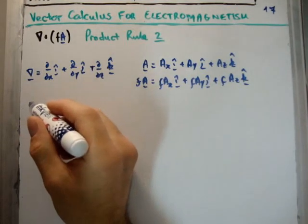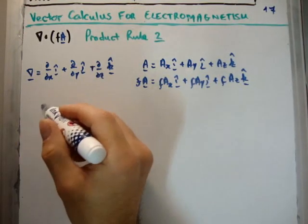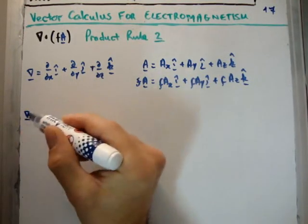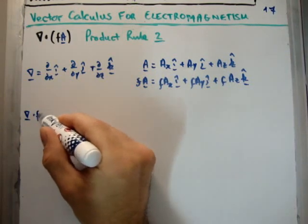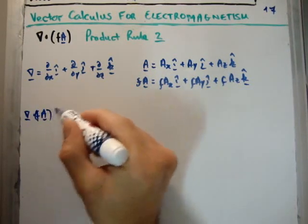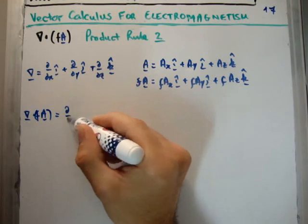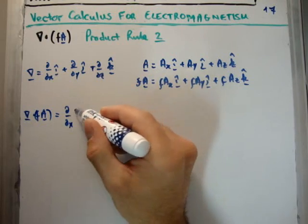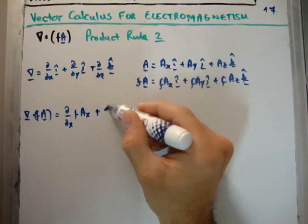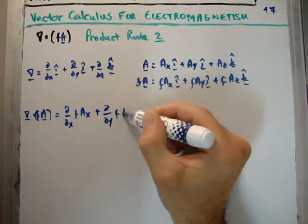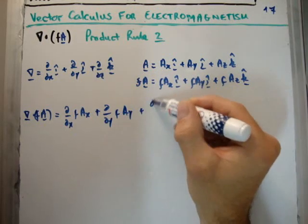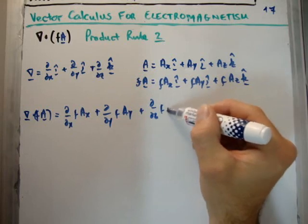So what we're going to get is we're going to take the divergence of f times the vector field a. That's going to be del/del x times f a sub x, plus del/del y f a sub y, plus del/del z f a sub z.